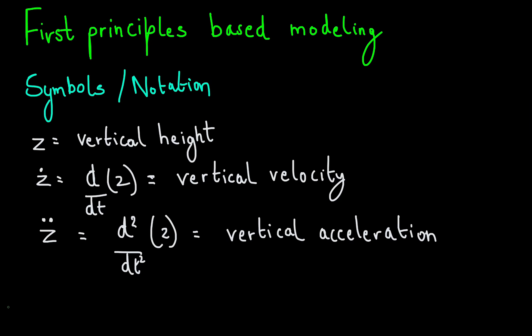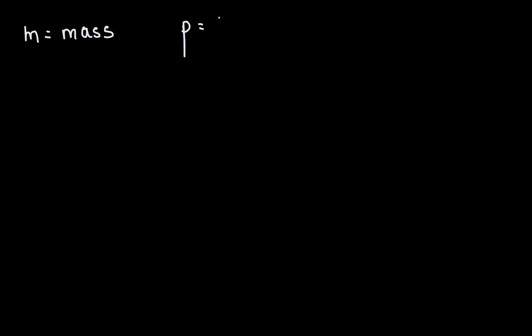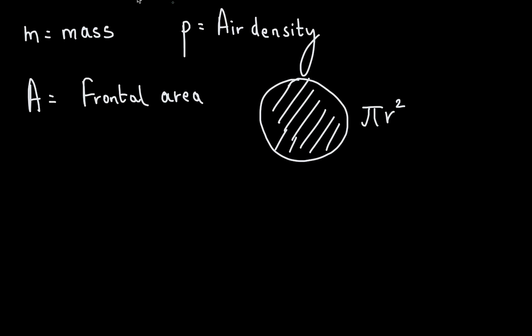On to parameters. m represents mass. rho, the Greek symbol, represents air density. A, that is capital A, represents a frontal area. So, for example, if you have a ball with radius r, 4 pi r square would be the total surface area, or the total external surface area of the ball. Pi r square would be the frontal area of the ball, or the cross-sectional area of the ball. c d represents the coefficient of drag. And last but not the least, we have a g, or our lowercase g, which represents acceleration due to gravity.